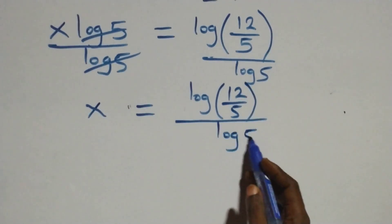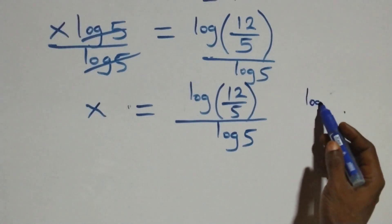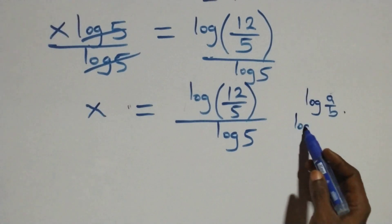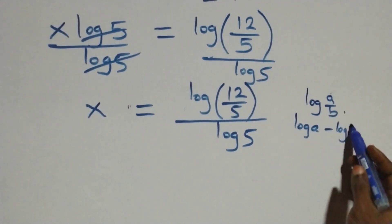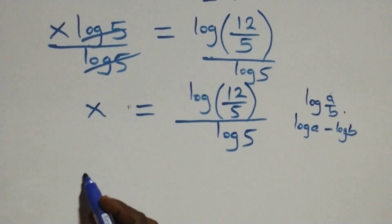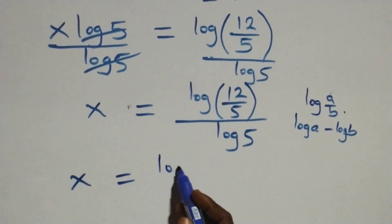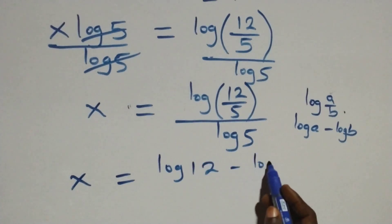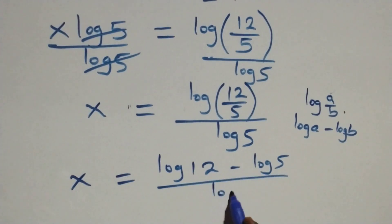This follows from the logarithm rule. When we have log a over b, this can be expressed as log a minus log b. So what we have here becomes x equals to log 12 minus log 5, divided by log 5.